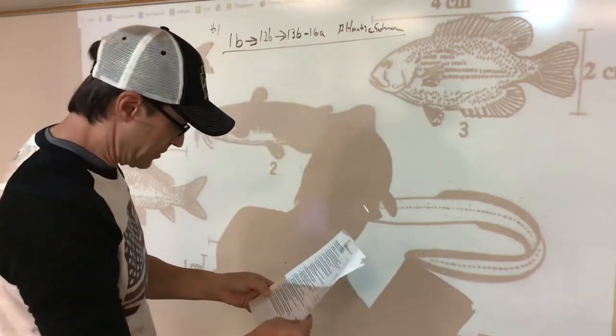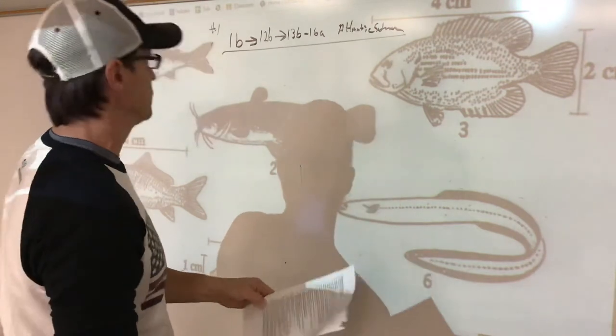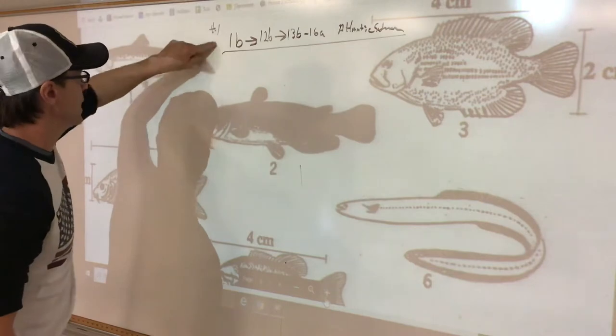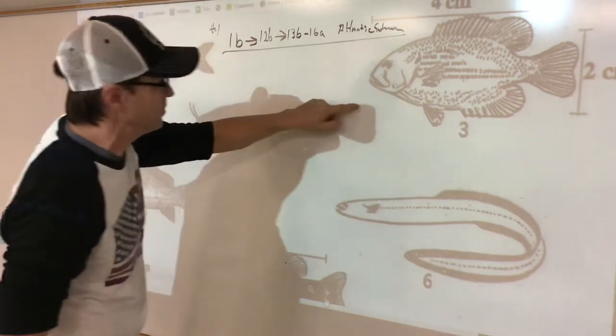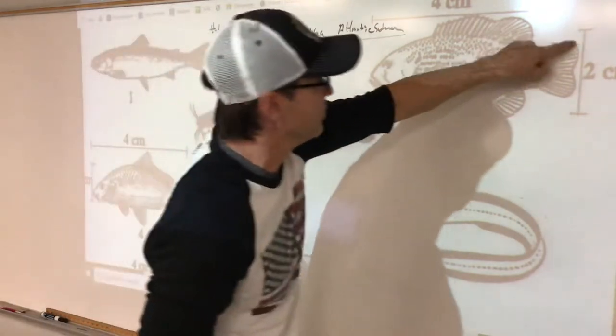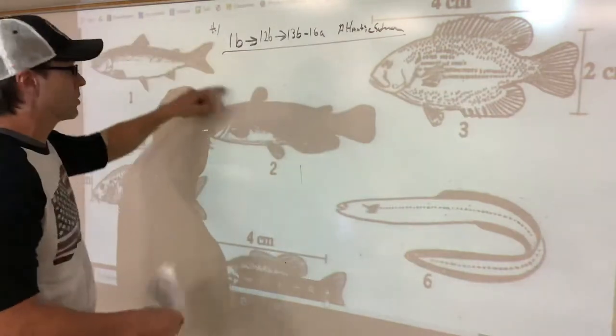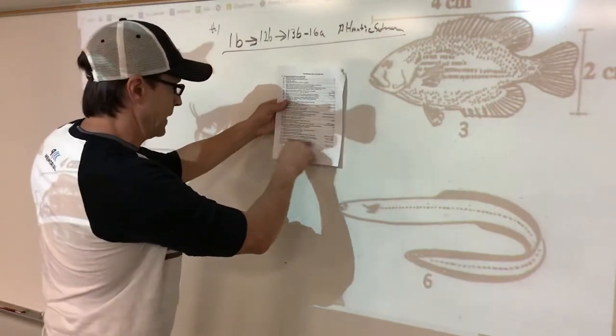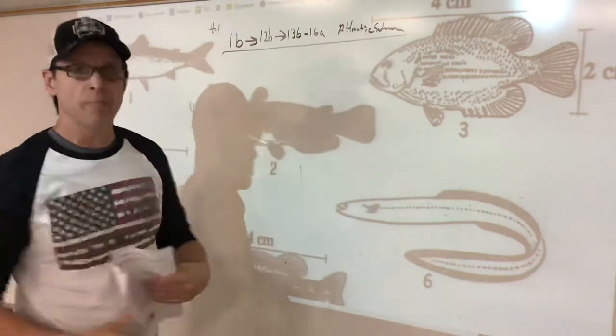16 says caudal fin deeply forked, caudal fin squared off. So this is the caudal fin, the tail fin. Deeply forked, see that nice wedgie in there, that's deeply forked. This would be rounded off, that would be rounded off. But this one's not as deeply forked. So that means it's 16A and I track out 16A, Atlantic salmon.